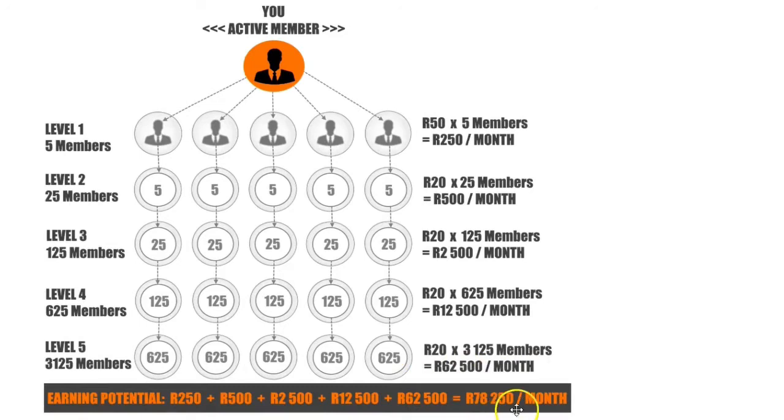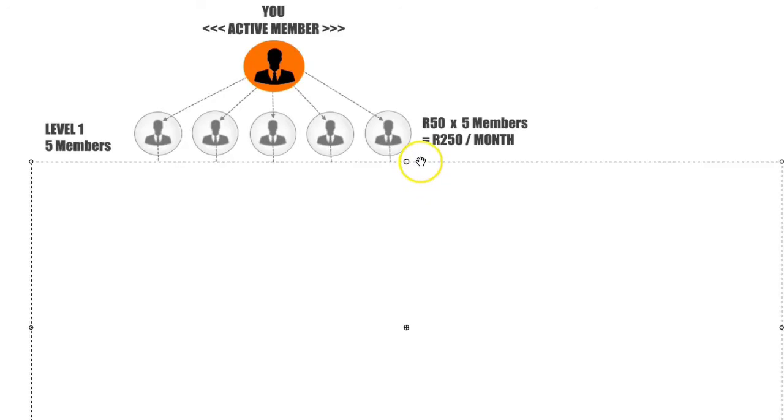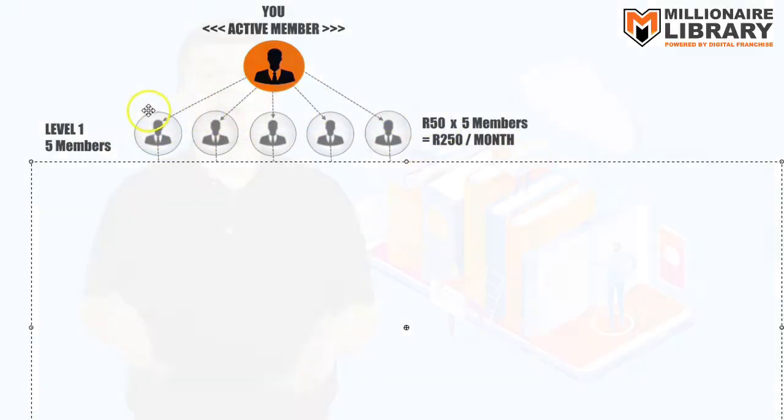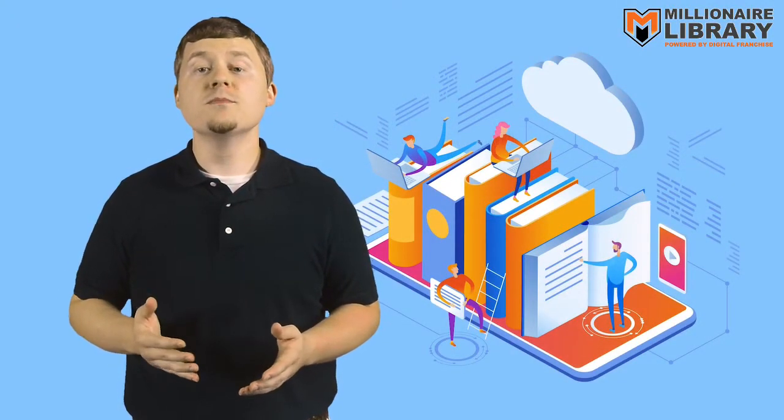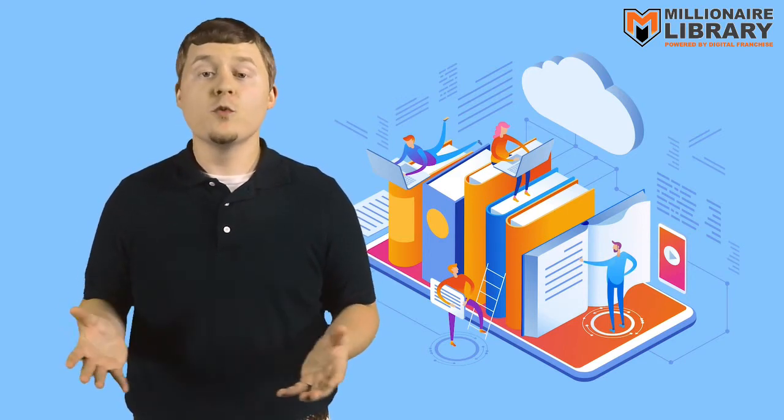This will make you a total profit of 78,250 Rand from all 5 levels. And if you want to earn more, you simply refer more than 5 members to your Millionaire Library income network in your Level 1. There are no limits to your earning possibilities with the Millionaire Library. You can even earn more than 78,250 Rand if you work hard at this.